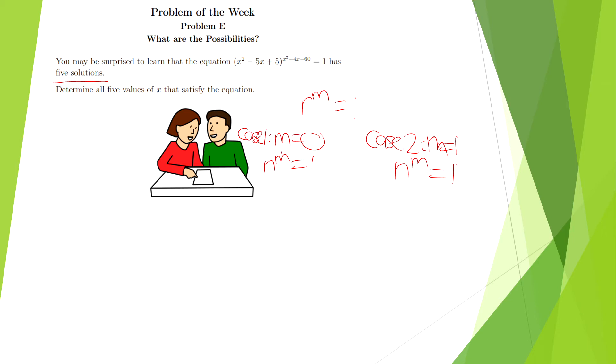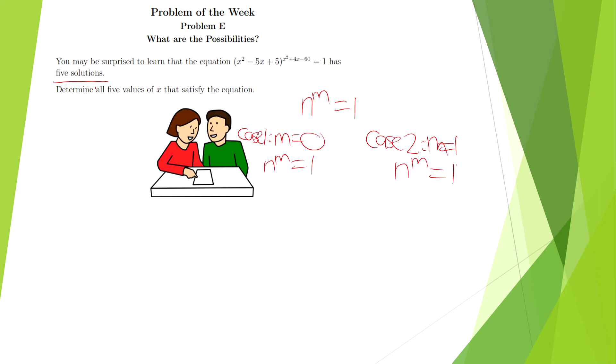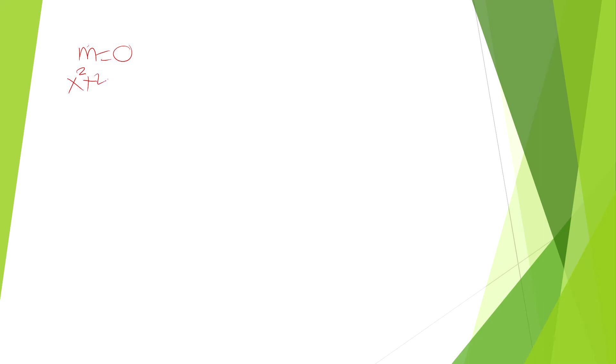For case 1, when m is equal to 0, that means the quadratic equation x² + 4x - 60 would be equal to 0. We could just do a bit of factoring to solve this. We can see here that this could be split to positive 10 and negative 6.